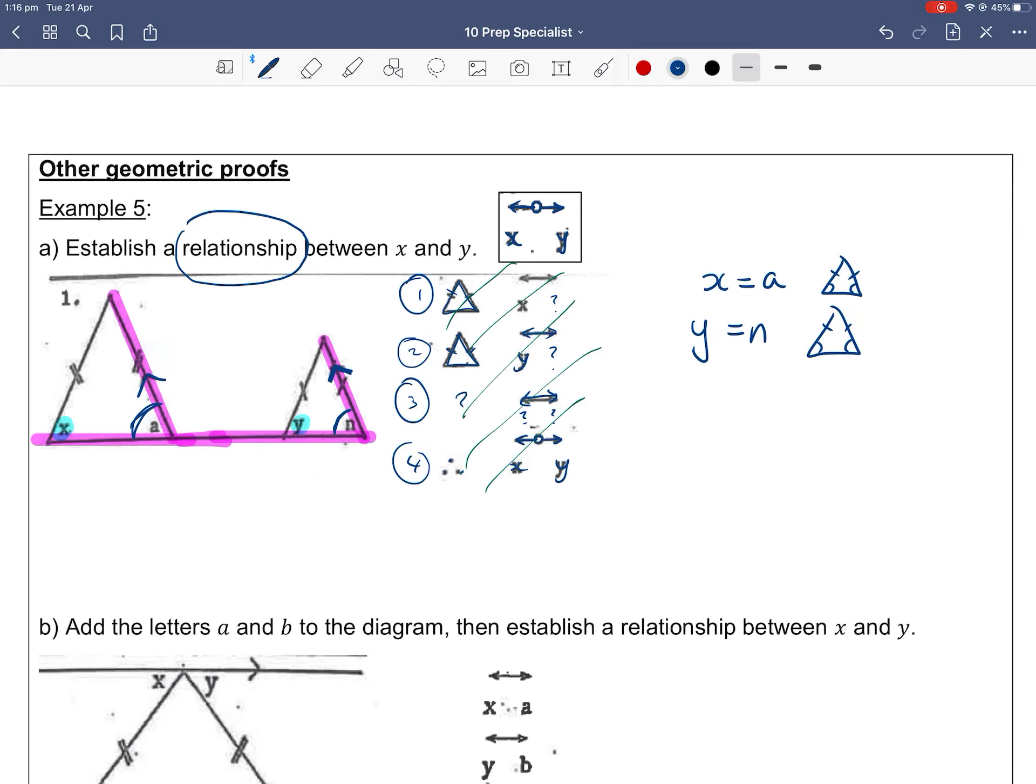To show that a and n are the same angles. So a equals n. Why? Because of the corresponding angle rule, the F rule. And because x is a and y is n and that a equals n, therefore we can conclude that x equals y.